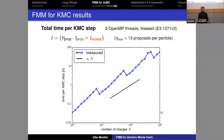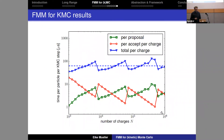We implemented this in our framework. The time per KMC step grows roughly in proportion to system size, with jumps where the number of fast multipole tree levels increases. Breaking the timing down: the proposal time (green) normalized to the number of charges remains constant, the accept step time also scales appropriately, and summing them gives a straight line confirming O(N) scaling as expected.